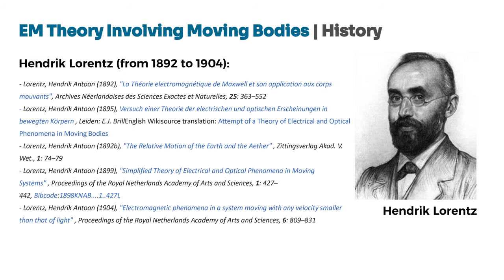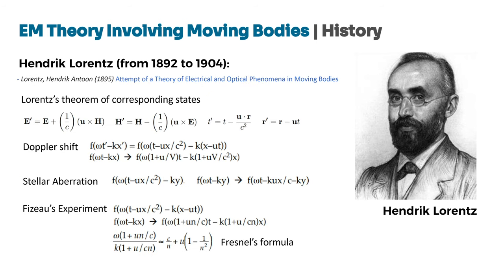Inspired by Voldemar Voigt's auxiliary variables, Lorentz adopted these variables and later multiplied them by the gamma factor. From 1892 to 1904, Lorentz published numerous papers about the electromagnetism of moving objects. His work included the introduction of electric and magnetic field transformations, as well as time and space transformations, which allowed him to explain various electromagnetic phenomena in moving frames. In his 1895 paper, 'Attempt of a Theory of Electrical and Optical Phenomena in Moving Bodies,' Lorentz introduced these transformations to explain key phenomena such as Doppler shift — the change in frequency of a wave for an observer moving relative to the source.